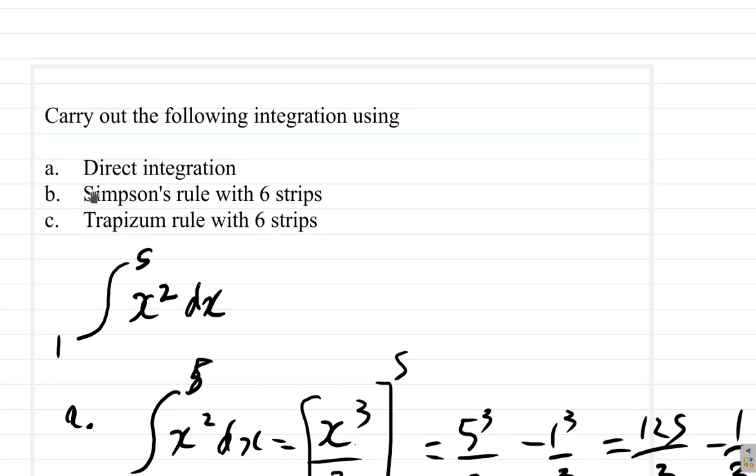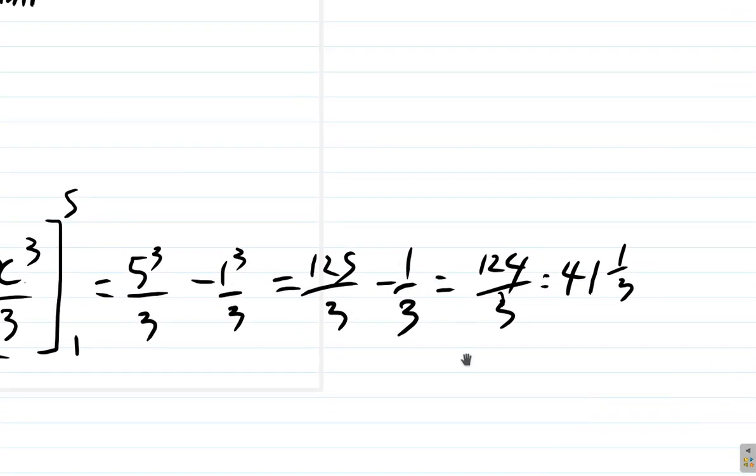So direct integration gives us 41 and 1 third square units. So there we have that.